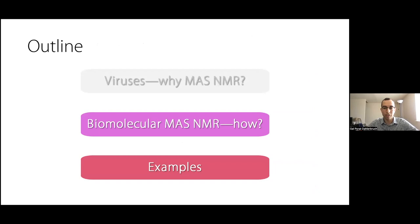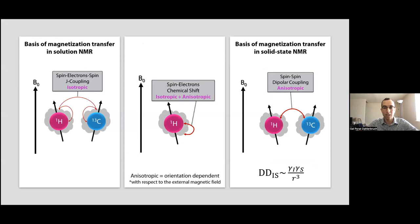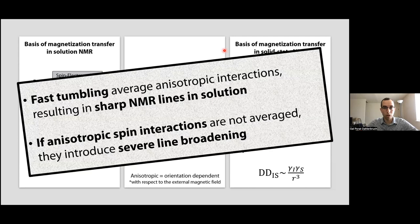I'll now briefly cover the fundamentals of biomolecular magic angle spinning NMR spectroscopy. In solution NMR, we usually observe two major spin interactions: the isotropic chemical shift and the J coupling, which we utilize to transfer magnetization between nuclei. However, there are two other significant spin interactions that affect spectra of immobile samples — the chemical shift anisotropy and the dipolar coupling. In solution NMR, these interactions are averaged because small molecules tumble relatively fast in solution. But in the solid state, these interactions are not averaged by fast movement, so chemical shift anisotropy and dipolar couplings introduce severe line broadening. Sharp lines in solution NMR are thus the result of fast tumbling and dynamics.